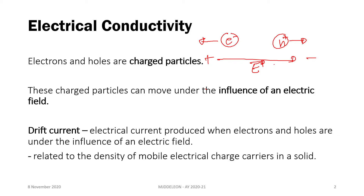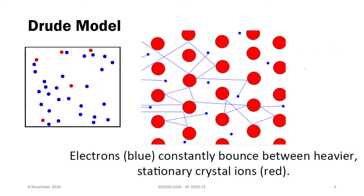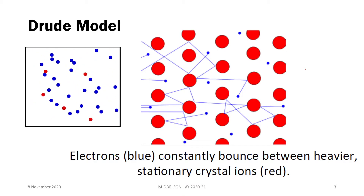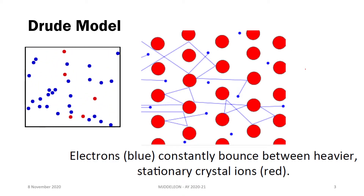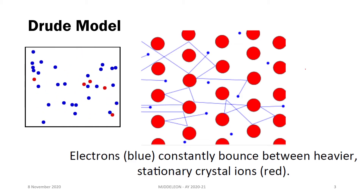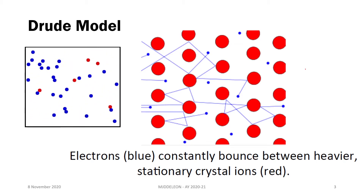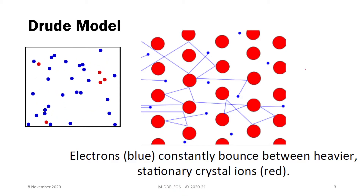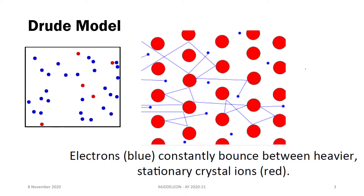The drift current tells us how good a conductor a material is. This is related to the density of mobile electrical charge carriers in our solid and how efficiently these charge carriers move in our solid. To describe electrical conductivity in solids, we can look at the Drude model — an application of the kinetic theory of gases, but now instead of gas particles, we have electrons in our crystal.